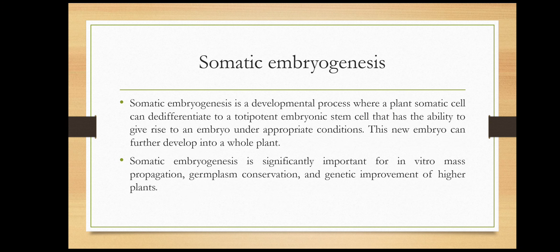Somatic embryogenesis is a developmental process where a plant somatic cell can de-differentiate to a totipotent embryonic stem cell that has the ability to give rise to an embryo under appropriate conditions. This new embryo can further develop into a new plant. Somatic embryogenesis is significantly important for in vitro mass propagation, germplasm conservation, and genetic improvement of higher plants.